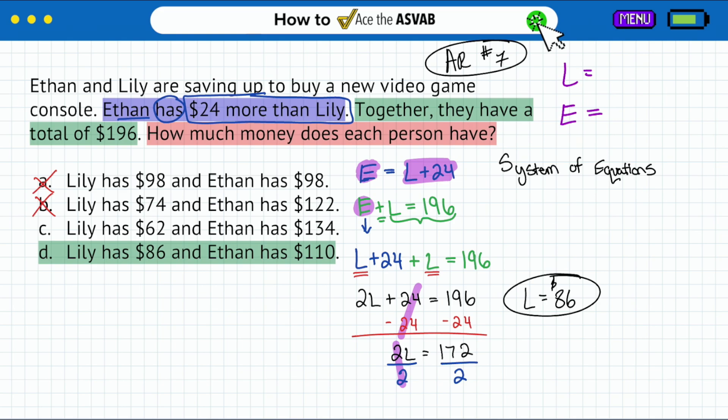We take a look at answer choice C, $62 and $134. Again, these two answers do add up to $196. However, is Ethan $24 more than Lily? No, you add 24 to 62 and you're going to get 86, not 134. So that answer is also eliminated. And then if you get to D, you see that if you add 24 to 86, you do get 110. You add these together and you do get $196. And that's how you can confirm by just using those answer choices that you do have the correct answer.